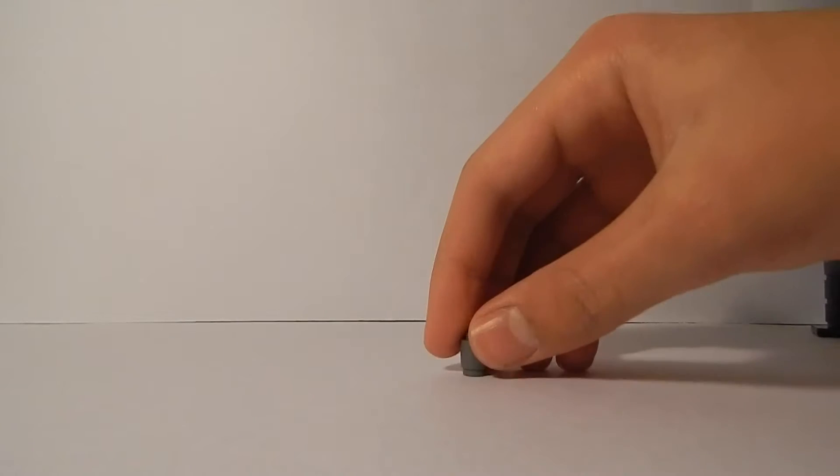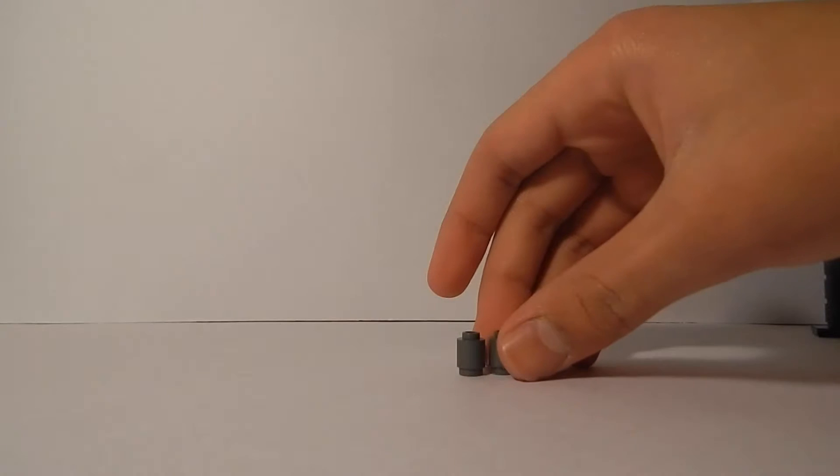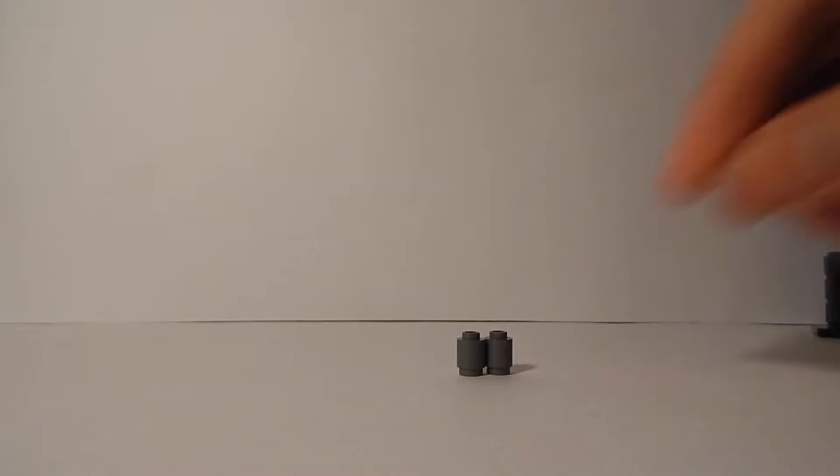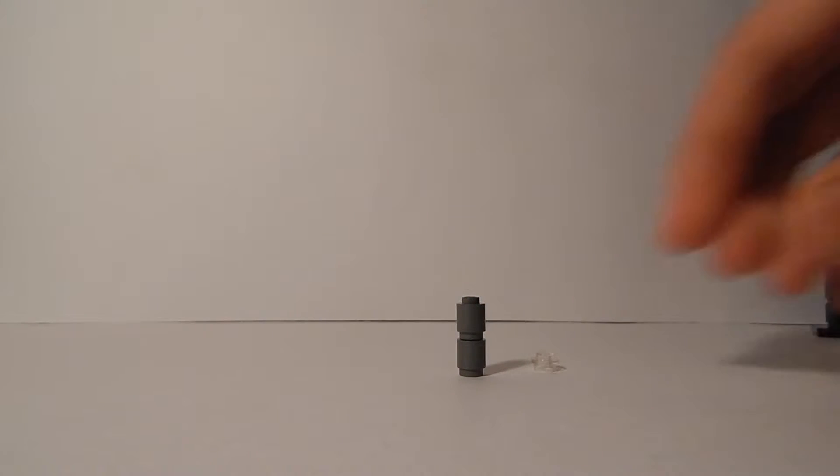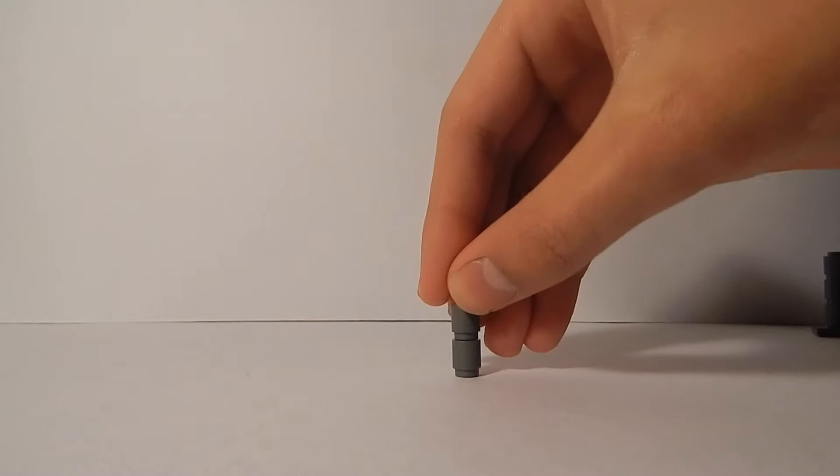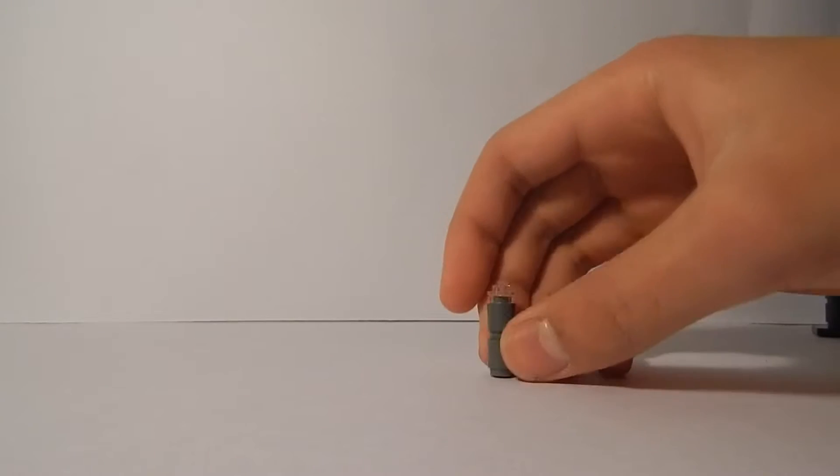Now I'm also going to get another two of these 1x1 circular bricks and a transparent stud to act as the lens for our telescope. I'm going to place the bricks on top of each other, followed by the transparent stud. This will be part of our telescope, so I'm going to set this off to the side.